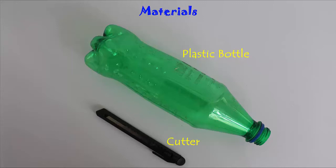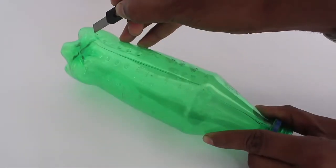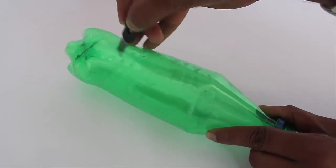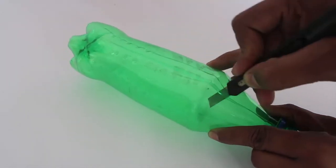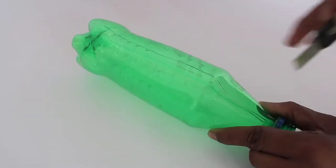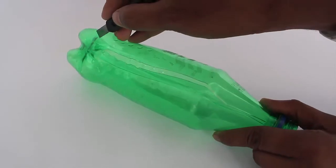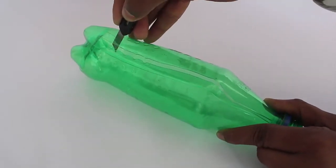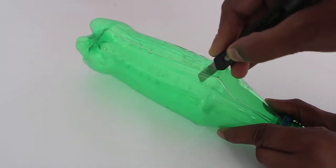You will need a stiff plastic bottle and a pen knife. Hold the mouth of the bottle and make long, one-centimeter wide uniform cuts along the whole surface of the bottle. Be careful while cutting and seek adult help.